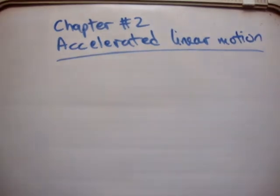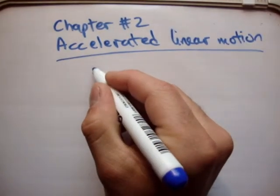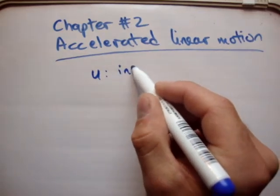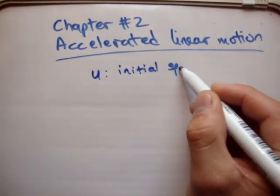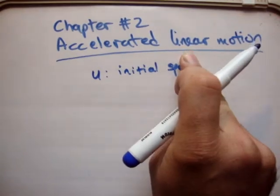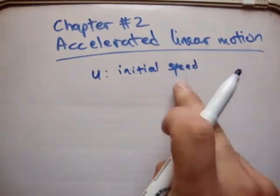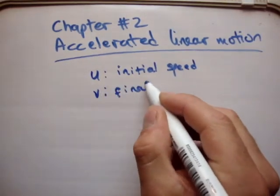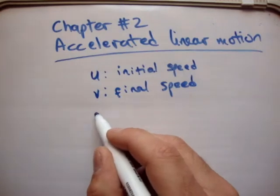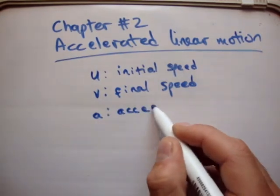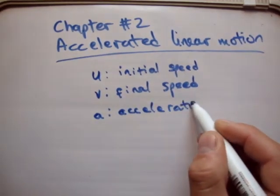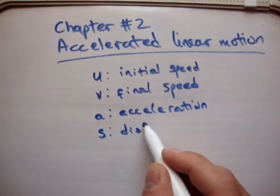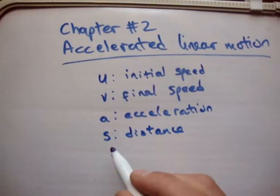I'll tell you the five variables that you will be dealing with. You'll be dealing with U, which means the initial speed. V, the final speed. A, the acceleration. S, the distance. And finally, T for time.